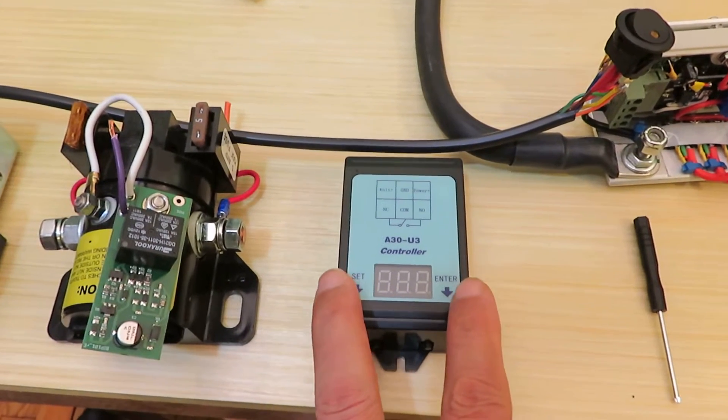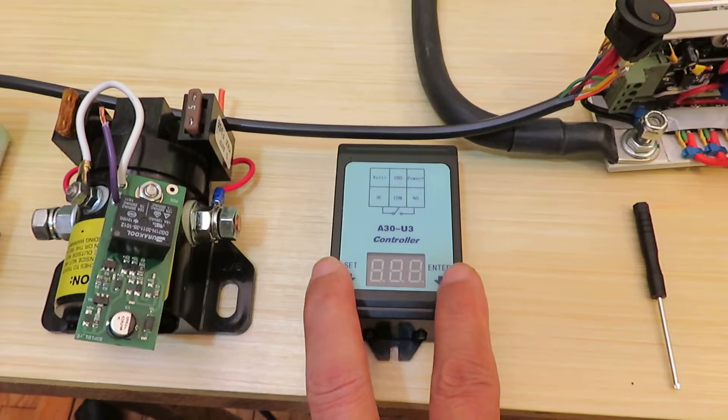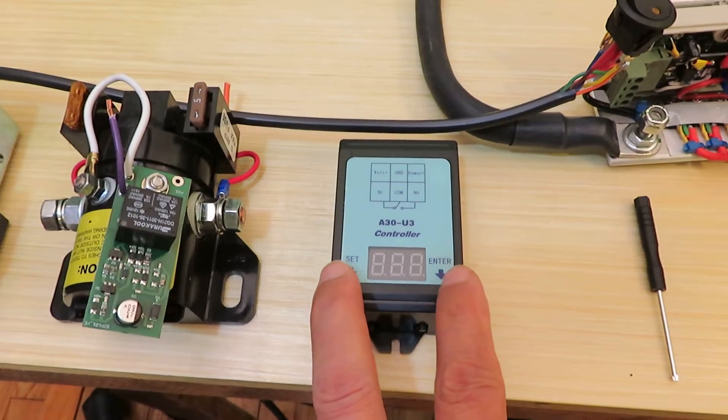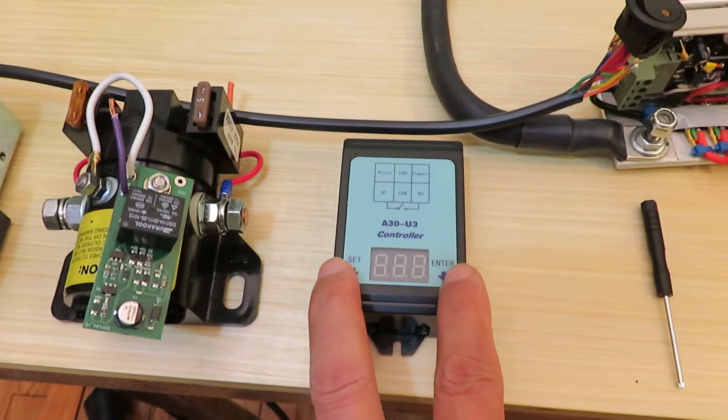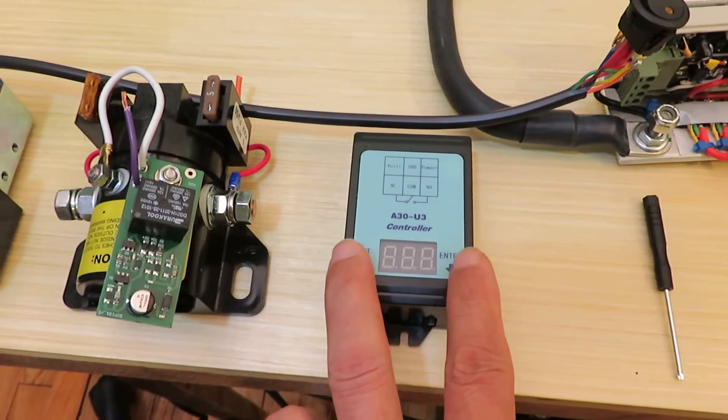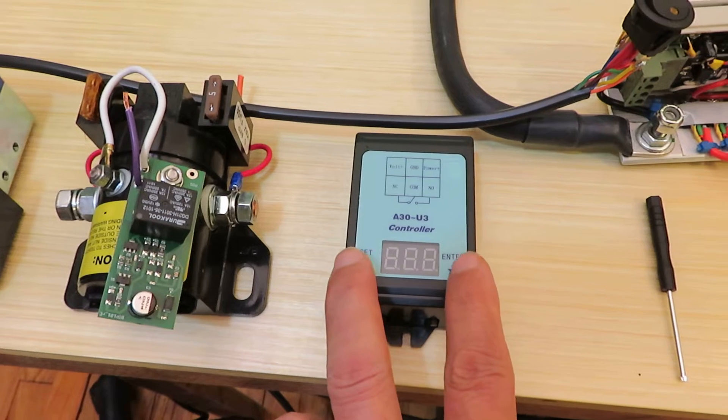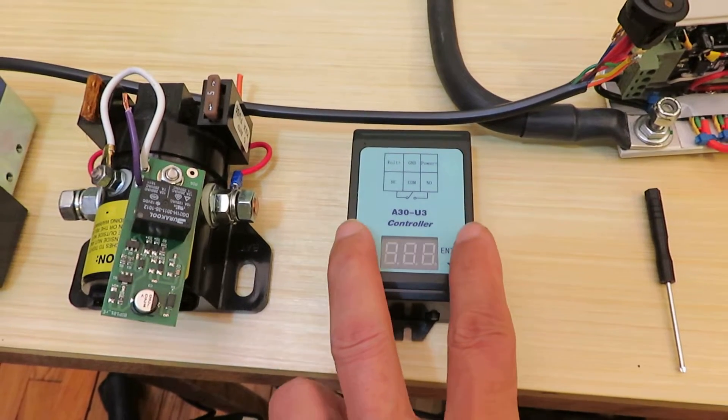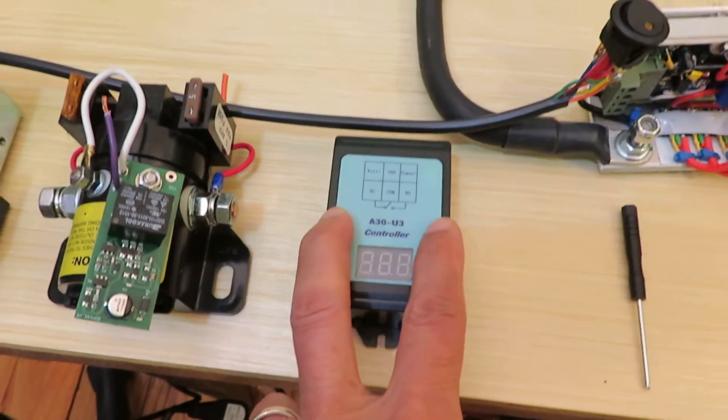This one is nice because I could program the voltage. When the voltage drop below a certain level I could disengage the relay and save the battery. The problem with this is this is only good for 30 amps.